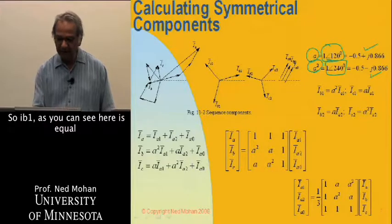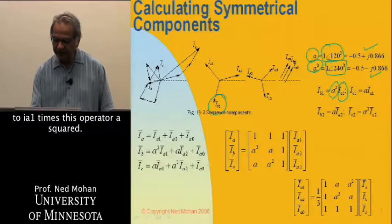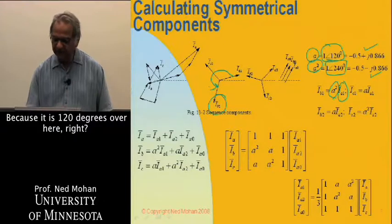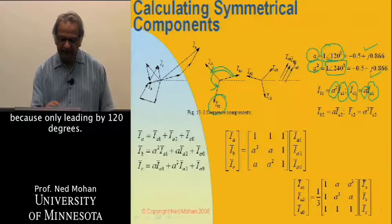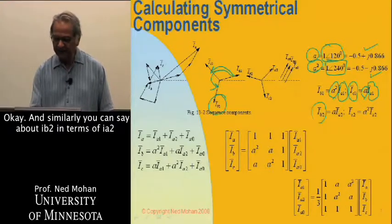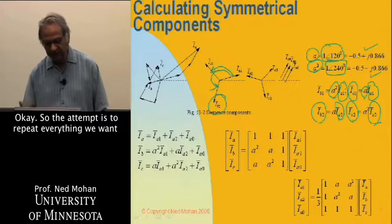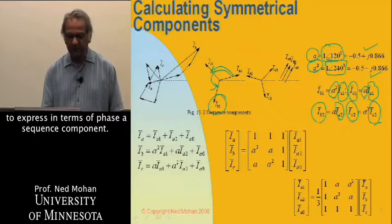Ib1, as you can see here, is equal to Ia1 times this operator A squared, because it is 120 degrees over here. Similarly, Ic1 is equal to Ia1 times A, because it's only leading by 120 degrees. Similarly, you can say about Ib2 in terms of Ia2 and Ic2 in terms of Ia2 over here. The attempt is, just to repeat, everything we want to express in terms of phase A sequence component.